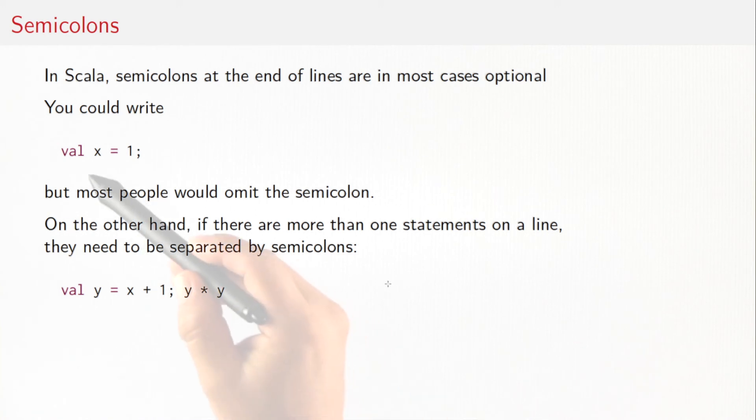You could have written val x equals one with a semicolon, but most people would omit that. The only situation where you really need a semicolon is if you want to put several definitions or expressions on one line.